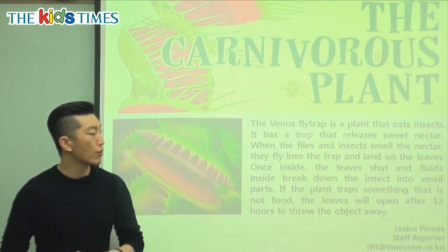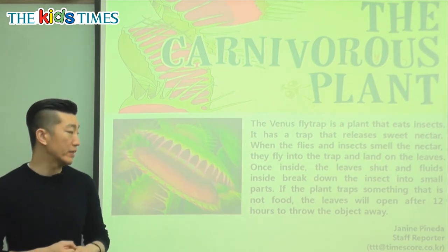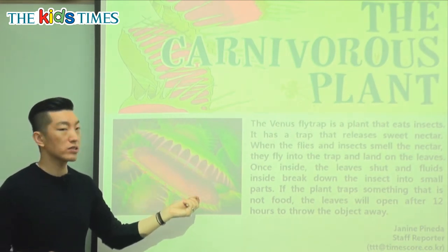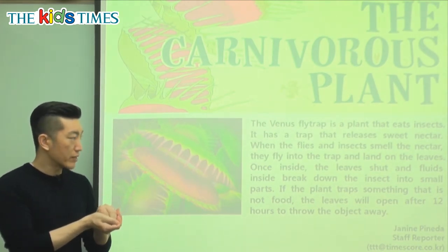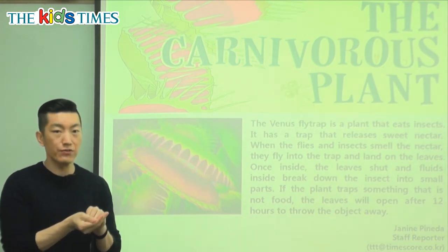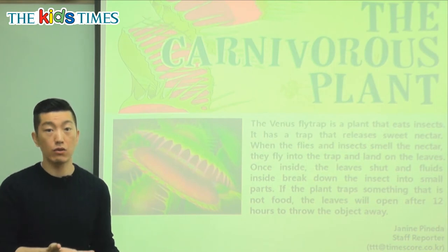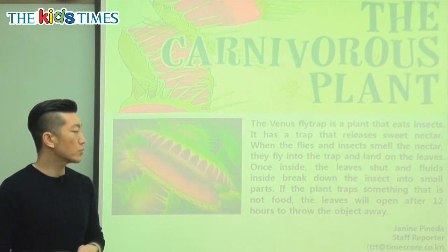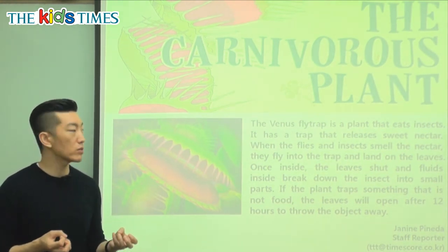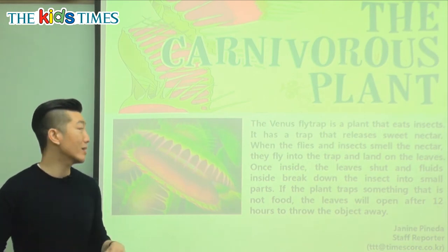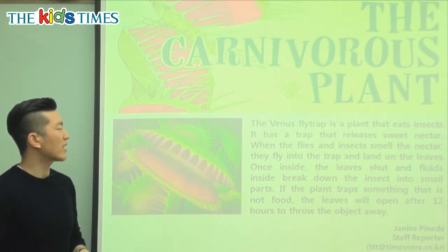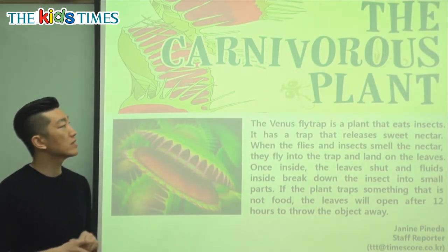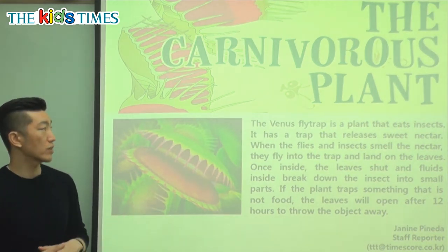If the plant traps something that is not food, the leaves will open after 12 hours to throw the object away. For example, if a leaf falls in because of the wind, after it traps it and tries to break it down, after 12 hours, if it's not food, it just opens up and lets it go. But if it is an insect, it will keep it there and keep producing liquids so the insect becomes smaller and smaller until it's eventually eaten. This is very dangerous for insects but safe for us — we could probably pull our fingers right out.